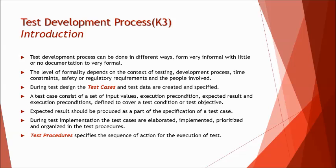During execution, you add another column called actual result, where you map what actually happens on the application, and then compare the actual result with the expected result to mark the status as pass or fail. If expected result equals actual result, it is passed; when expected does not equal actual, it is failed.